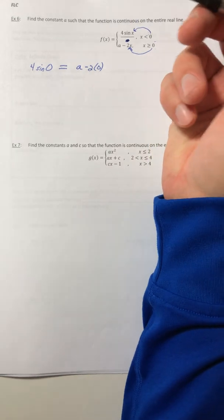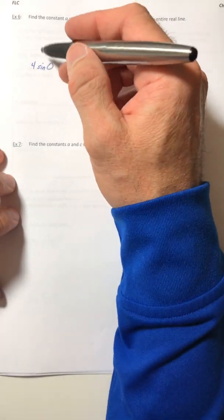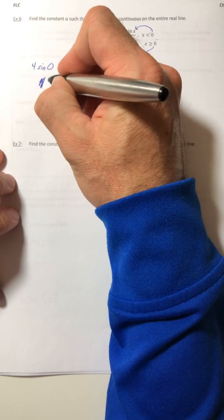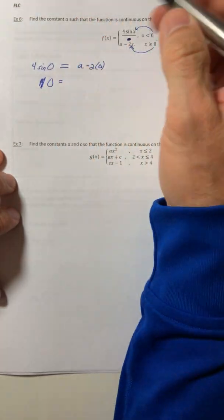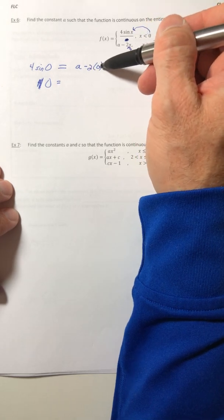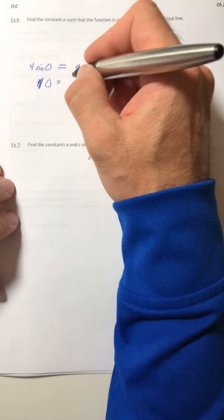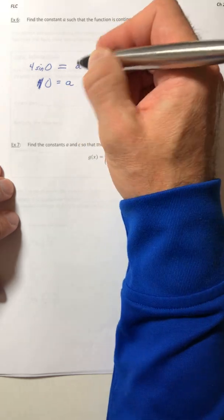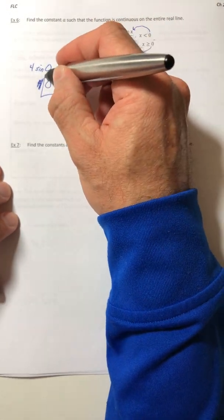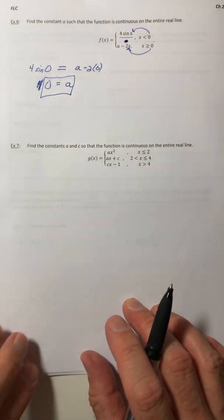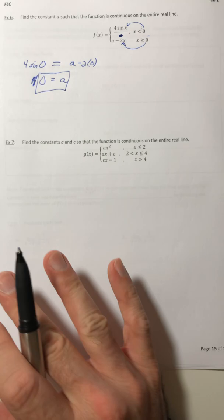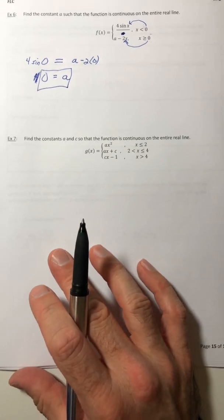Now you have an equation to solve for a. Sine of 0 is 0, so 4 times 0 is 0. On the right side, negative 2 times 0 is 0, and a minus 0 is a. So a is equal to 0. Not that hard. Don't panic because it's a piecewise function — you guys know how to deal with them.